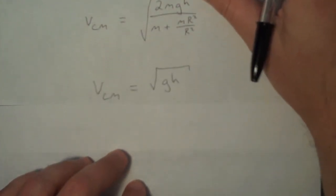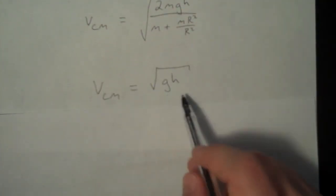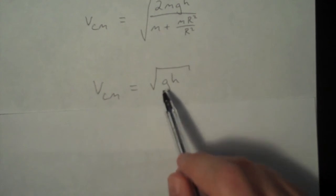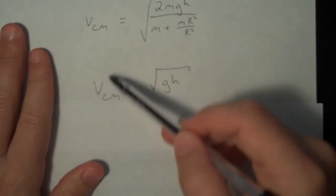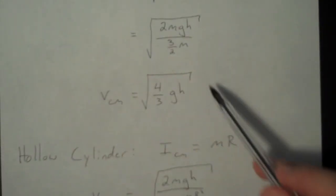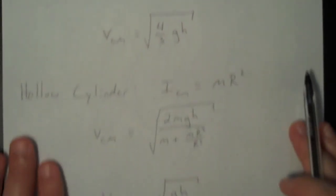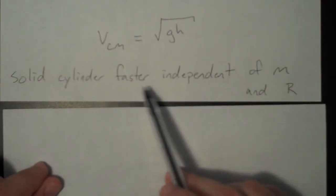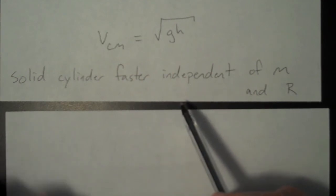So you plug in that moment of inertia into our expression for the center of mass speed. And after a little bit of cancellation, you get the following. The speed is just the square root of gh.